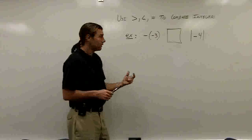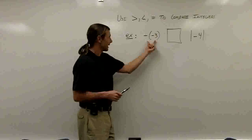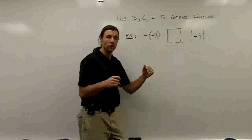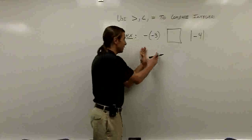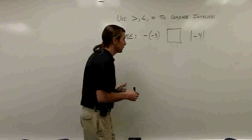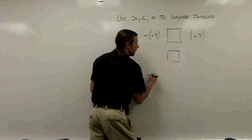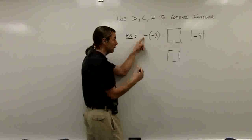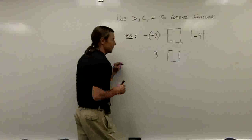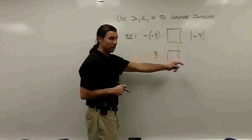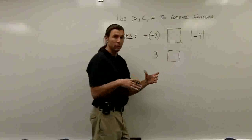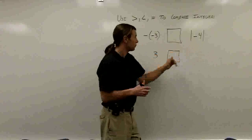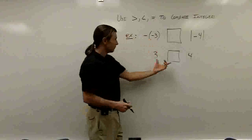In my example here, these integers are not easy to see right away. I have the opposite of negative 3 on one side, and the absolute value of negative 4 on the other. I'll bring down my comparison box. The opposite of negative 3 is positive 3. The absolute value of negative 4 is positive 4, since taking the absolute value of a number makes it positive.